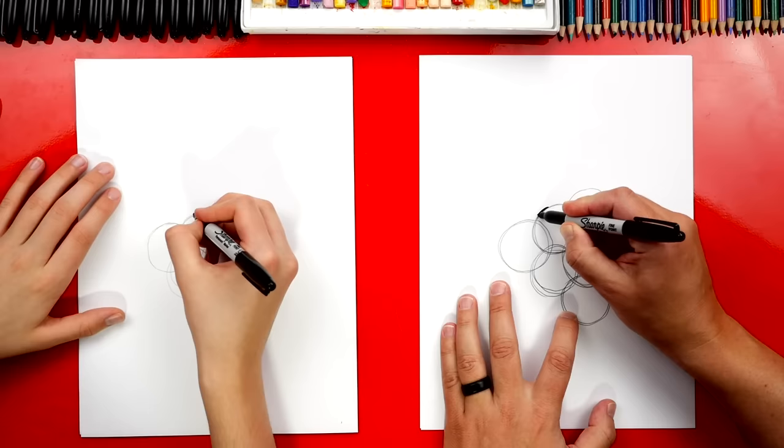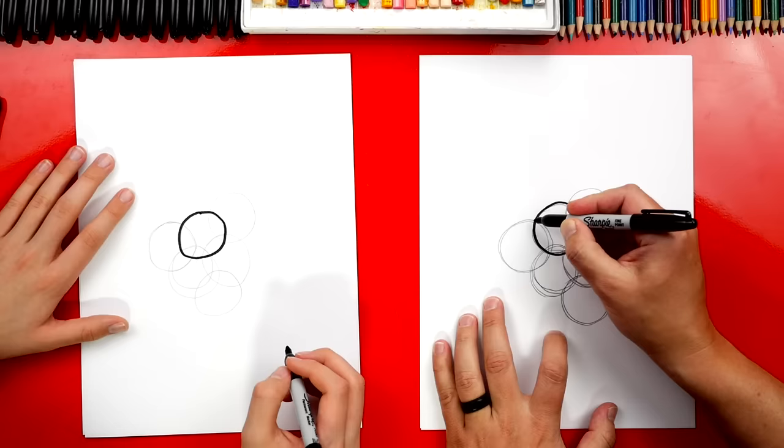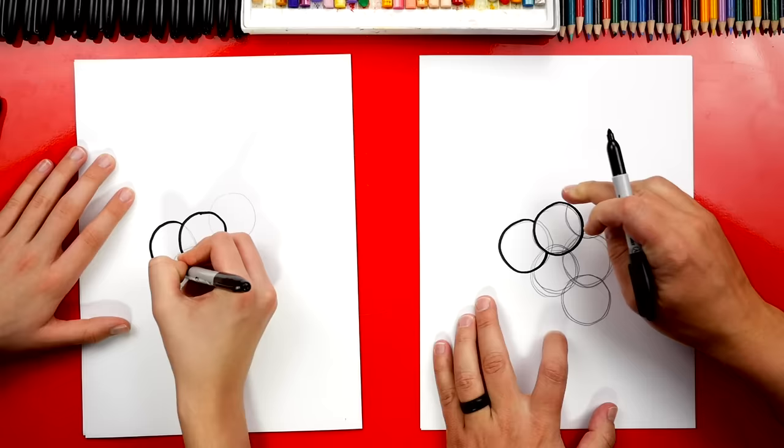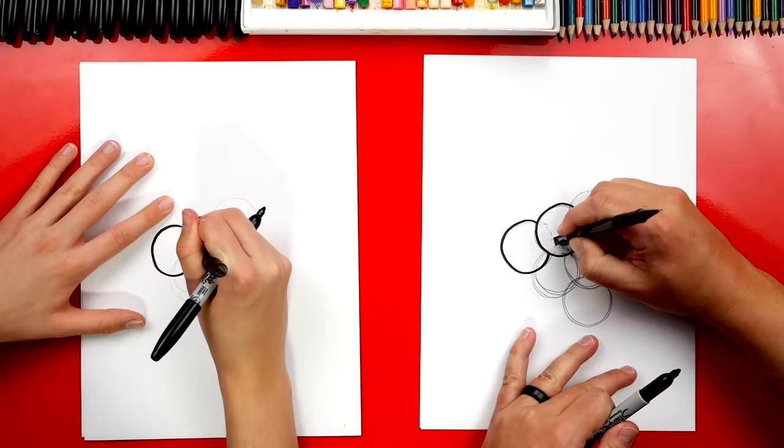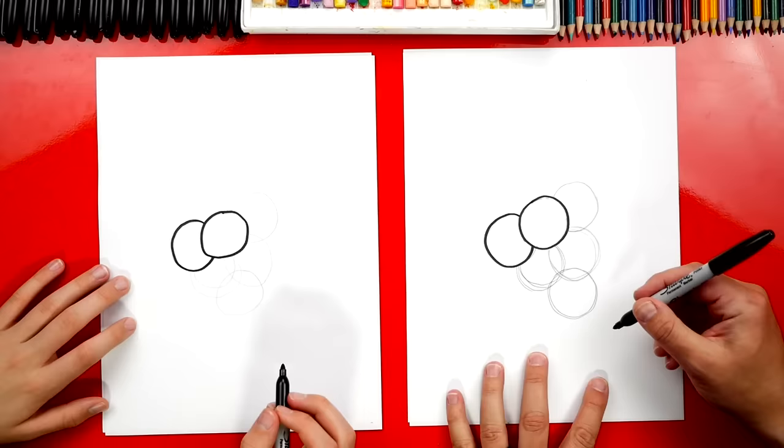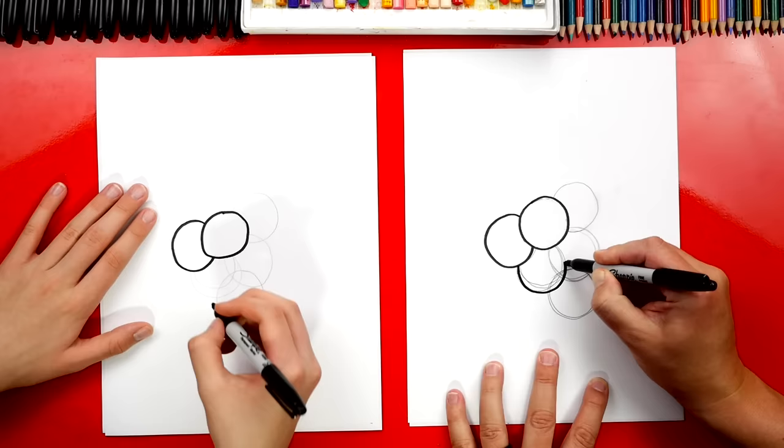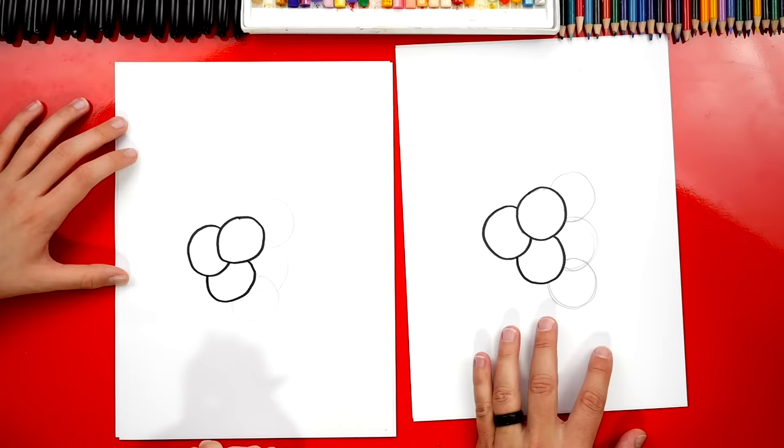Now we're gonna switch to our marker and we're gonna trace over the first circle that we drew. I'm gonna draw all the way around over the pencil. Then let's draw the next one on the left but this time we're only gonna draw part of the circle. So we're gonna trace around but the part that's going over that first grape we're gonna leave off. Now we can use our pencil and come in here and erase all of the pencil lines inside of that first grape that we drew. Let's also erase the lines inside of the second grape.